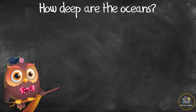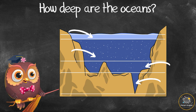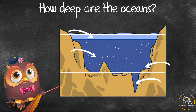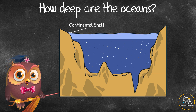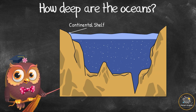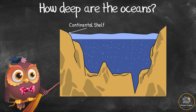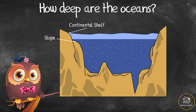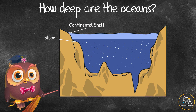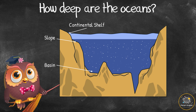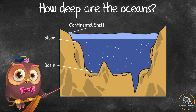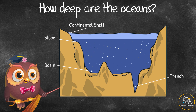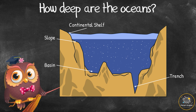How deep are the oceans? Oceans have many levels. The shallowest part of an ocean is called the continental shelf, which lies along the edges of a continent. The continental shelf slopes down toward the deep parts of the ocean called the basin. Some parts of the oceans have deep cracks in the ocean floor called trenches.